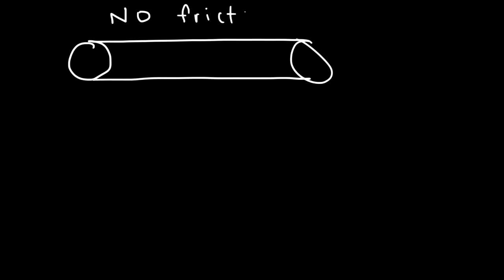Let's consider a pipe that contains a fluid with no viscosity. If there's no viscosity, then there's no internal friction. And as a result, the fluid can move with constant speed without any net force. So the net force is zero. Now, pressure and force are related. So if the net force is zero, then the pressure difference has to be zero.